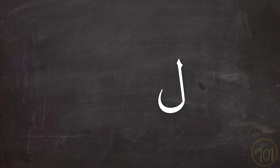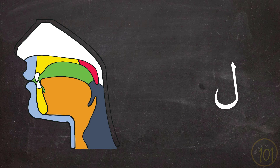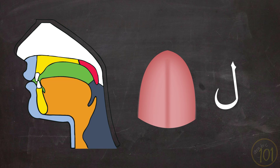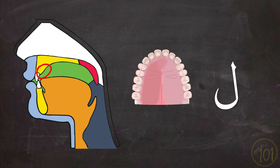To pronounce this sound properly, you need to identify two articulators. First, the front edge of the tongue, which is that highlighted area. And second, the alveolar ridge. The alveolar ridge is that bony part behind your front teeth. It is also the socket in which your teeth are.